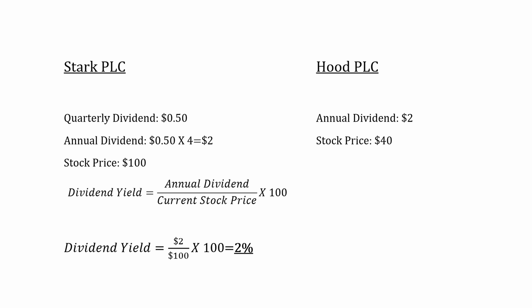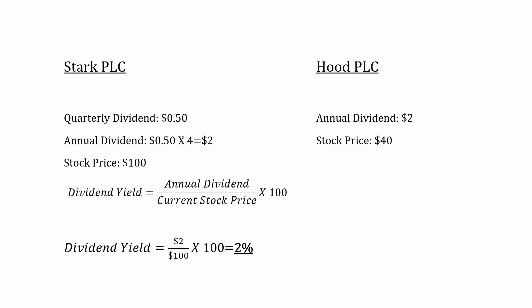Hood PLC also pays an annual dividend of $2 but its stock price is $40. Using the same calculation, we find that its dividend yield is 5%, meaning you're getting 5% of your investment paid back to you in the form of a dividend annually. Obviously, if you're picking between these two stocks, you'd end up choosing Hood PLC because you're getting more for your money, and in general a higher dividend yield is better.